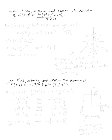Let's move on to the next example: find, describe, and sketch the domain of i(x, y) = ln((x² + y² - 2y) / (2x - y)). The domain will be the set of all (x, y)'s. For the ln, we want the input to be strictly greater than zero, and we want the denominator not to be zero.